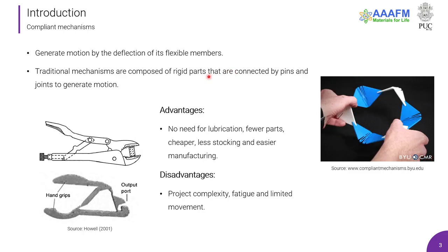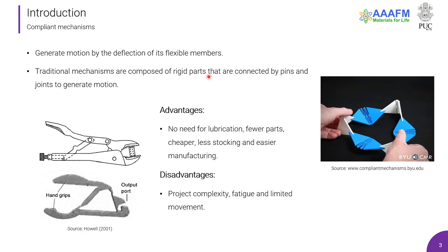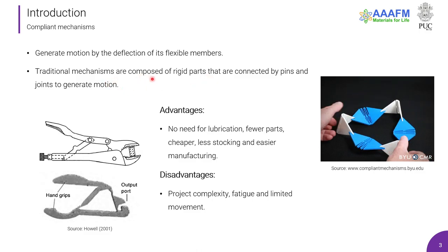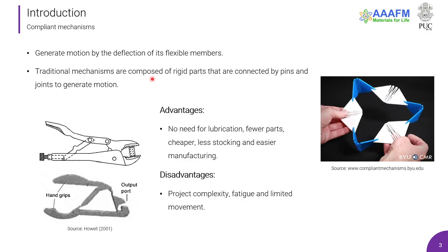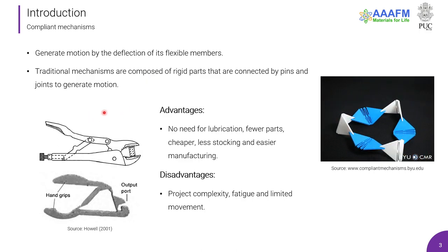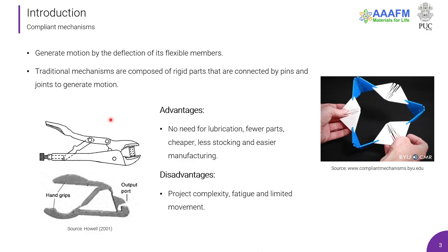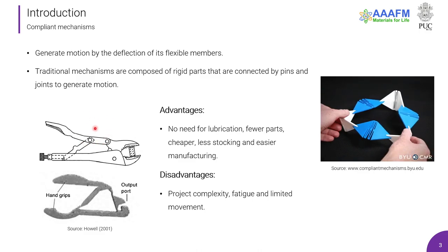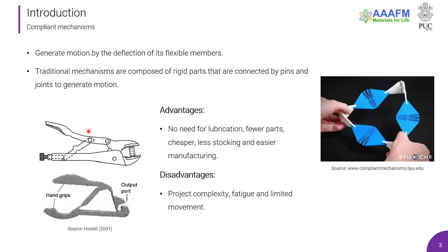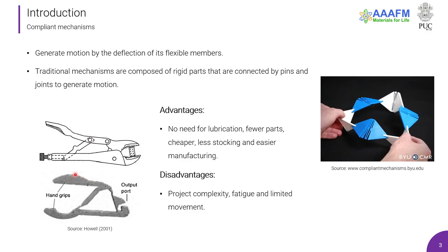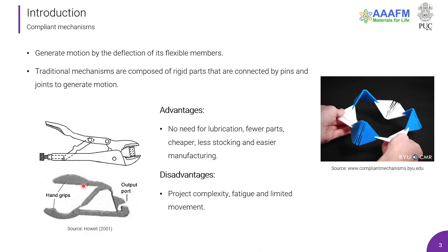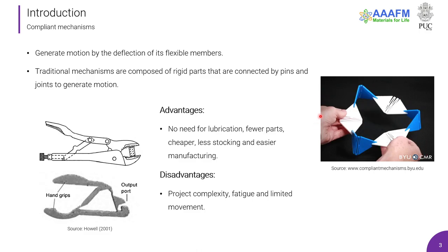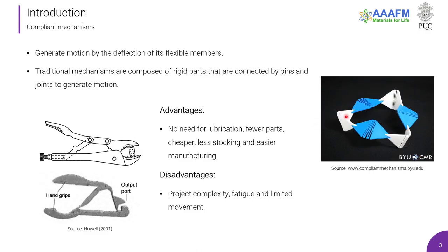Compliant mechanisms generate motion by the deflection of flexible members. On the other hand, traditional mechanisms are composed of rigid parts that are connected by pins and joints to generate motion. Here on the left, there is a picture of the difference between these mechanisms, where the top traditional mechanism has several pins and joints and is composed of at least 10 parts, and on the bottom the compliant mechanism is a single 3D printed structure. Here on the right, there is another printed compliant mechanism that rotates.